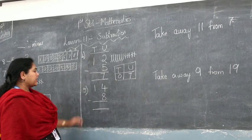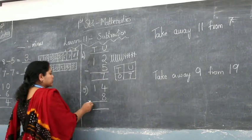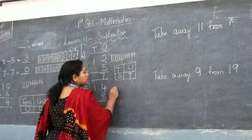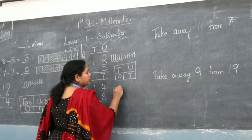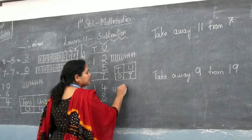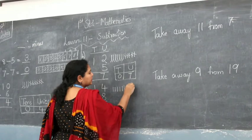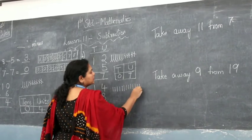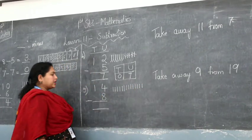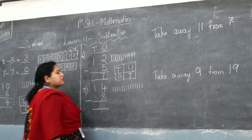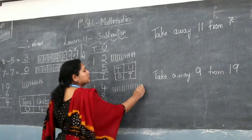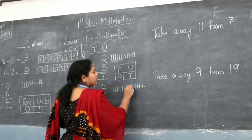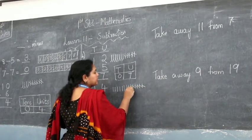Now 14 minus 8 is how much? 14 minus 8. I draw 14 lines: 1, 2, 3, 4, 5, 6, 7, 8, 9, 10, 11, 12, 13, 14. I have 14 lines and I am taking away 8: 1, 2, 3, 4, 5, 6, 7, 8. I removed 8 out of it.